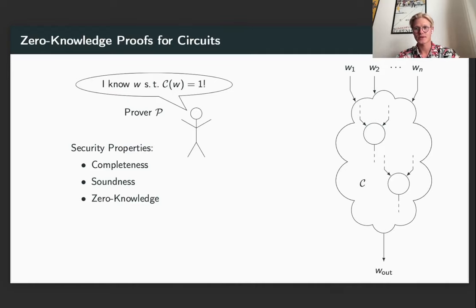We consider Zero Knowledge Proofs for circuits, where the prover has a witness W, so when this witness is input into circuit C, the circuit outputs either accept or reject. This must satisfy the three security properties called completeness, soundness and zero knowledge.